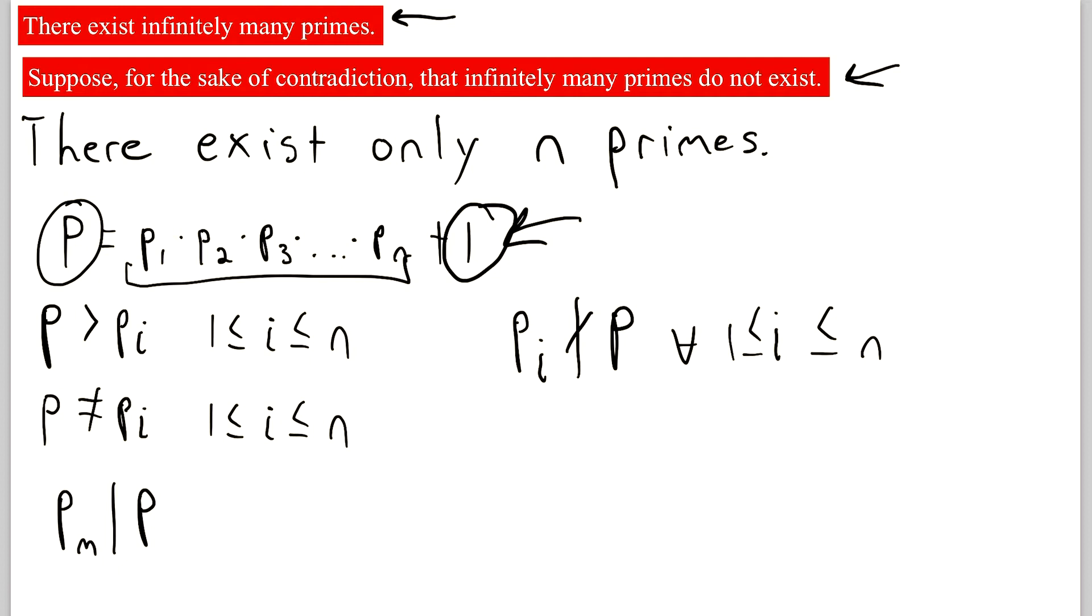Thus, by contradiction, we get the proposition we wanted. There exist infinitely many primes, because when we assumed that there existed finitely many primes and not infinitely many primes, we were able to show that that leads to a contradiction.